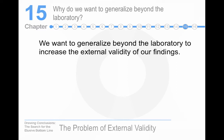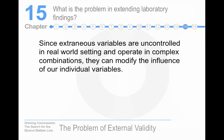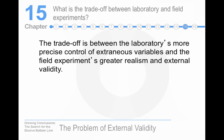Why do we want to generalize beyond the laboratory? No one wants to study something that is just a laboratory artifact — meaning something that only occurs in the lab. We want to generalize our results to the real world. The problem is that fundamentally the real world is a much messier place than the laboratory. Labs are useful because they allow us to isolate a behavior of interest and control extraneous variables, but control is much higher in labs than in the real world. There is a trade-off between the lab's more precise control of extraneous variables and field experiments' greater realism and external validity.